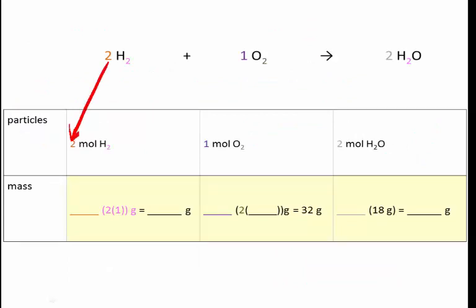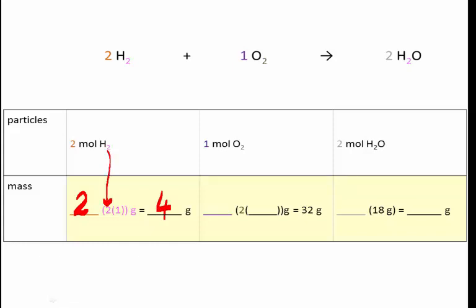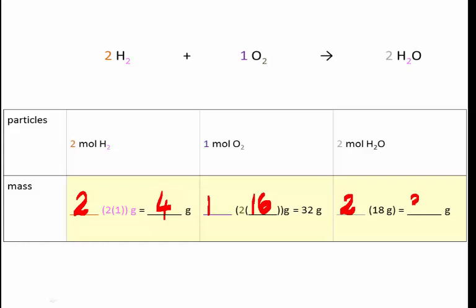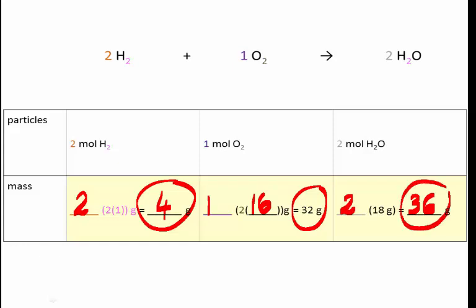We convert that particle ratio into a mass reacting ratio. Two moles of hydrogen have a mass of 2 × 2 = 4 grams — that 2 is because it's H₂, and the molar mass of H is 1. One mole of oxygen: O has a molar mass of 16 grams on the periodic table, and we multiply by 2 because it's O₂, giving us 32 grams as the mass of 1 mole of O₂. Two moles of water is 2 × 18 = 36 grams. So the reacting ratio in mass is 4 grams of hydrogen for every 32 grams of oxygen to produce 36 grams of water. Notice that 4 plus 32 gives 36 — no matter is created or destroyed.